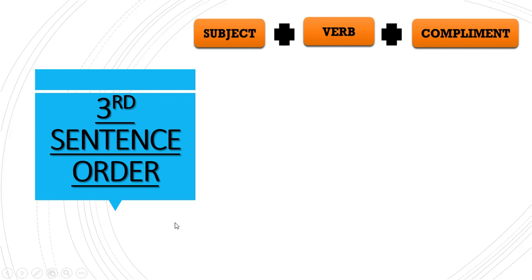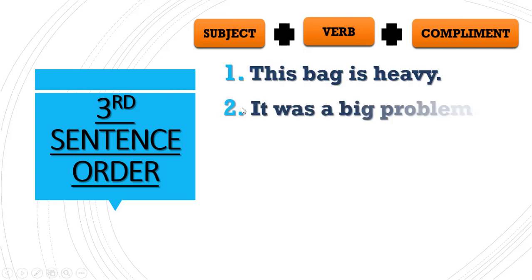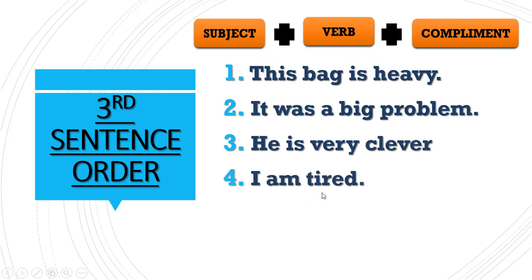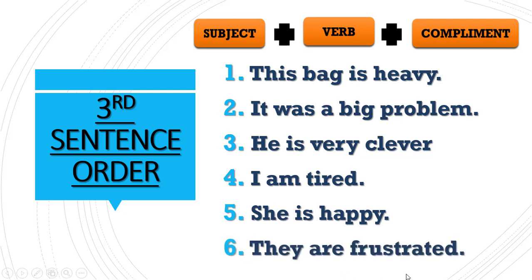The third sentence order is subject plus verb plus complement. In this structure we use the to-be verb. Examples: 'This bag is heavy,' 'It was a big problem,' 'He is very clever,' 'I am tired,' 'She is happy,' 'They are frustrated.' In all these sentences the state verb is used as the complement.